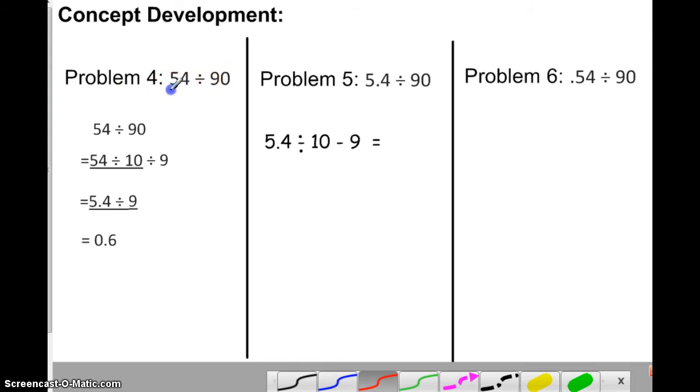We have the whole number 54 and the whole number 90. And it's just down here now. So what we're doing is we're taking out the 10. So the 10 is now here. So you're doing 54 divided by 10. And that's 5 and 4 tenths. You already divided the 90 by 10. So you're left with the 9. So now your problem becomes 5 and 4 tenths divided by 9. And the answer is 6 tenths.